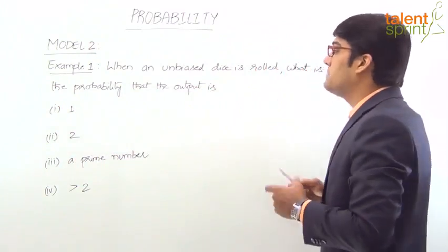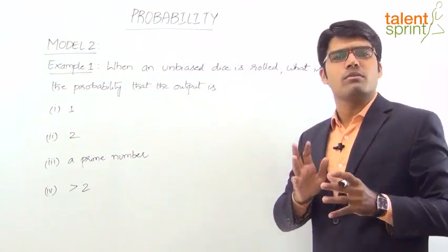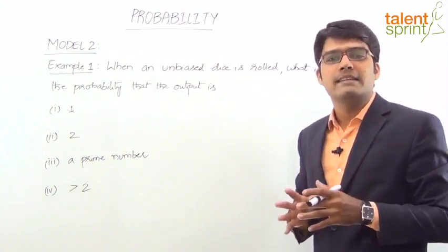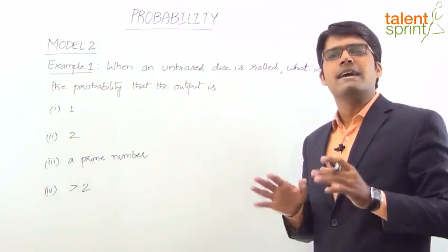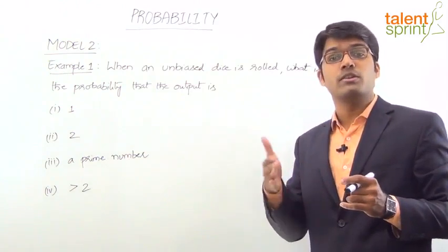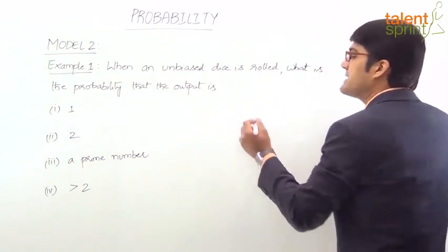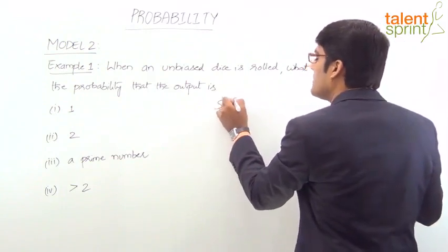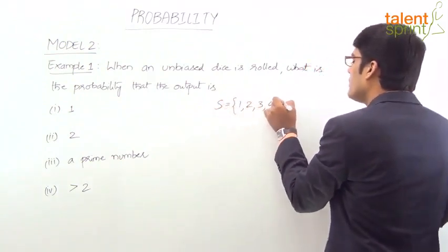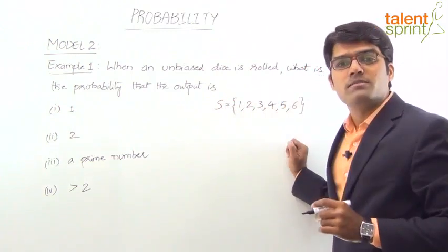An unbiased dice means a normal, regular dice — there is no bias. So there are 6 possible outputs: 1, 2, 3, 4, 5, and 6. The sample space is {1, 2, 3, 4, 5, 6}, giving us a total of 6 possible outcomes. In all cases, the denominator is 6.